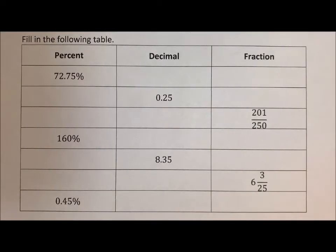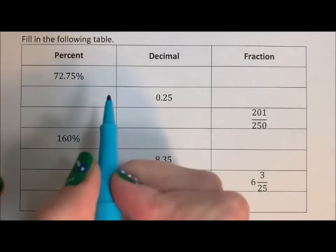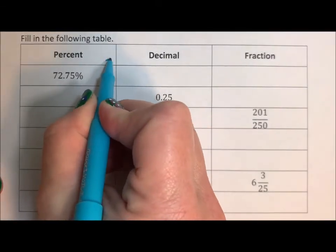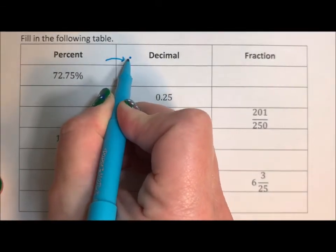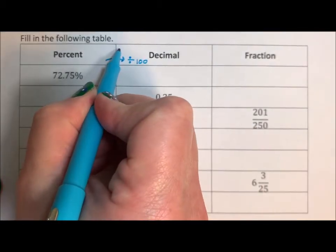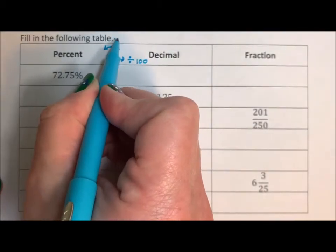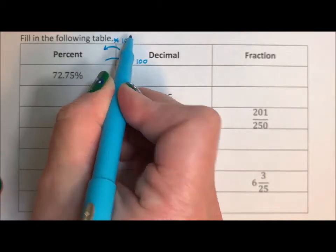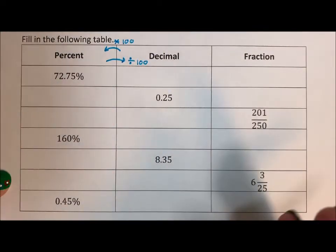So I just want to fill in this table, kind of flowing between the three forms of a number. To go from a percent to a decimal, you divide by 100. And to go from a decimal to a percent, you multiply by 100. So we'll start with these two columns where we can.